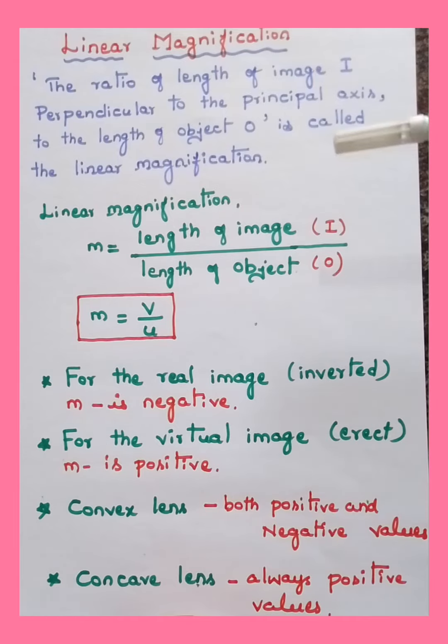I'm moving to the concept now. In the previous videos we have already discussed about the position of the image formed in case of convex lens and concave lenses with respect to the objects.